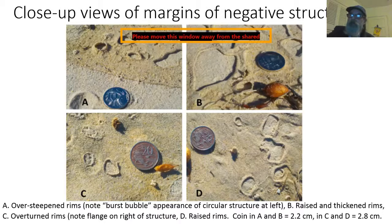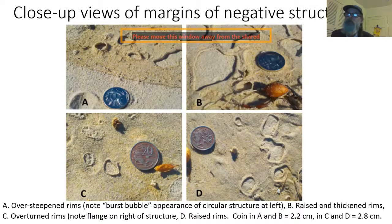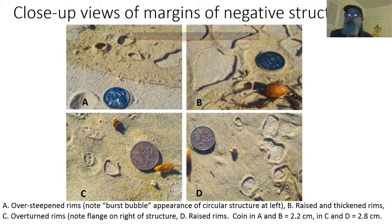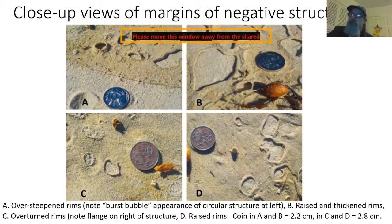Remember that sand is not meant to form slopes of more than about 40 degrees — that's the maximum natural angle of repose of sand. Moist sand can be a bit steeper, but to be vertical or overturned is not meant to occur in moist sand without some sort of biological binding agent.